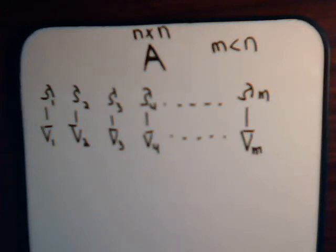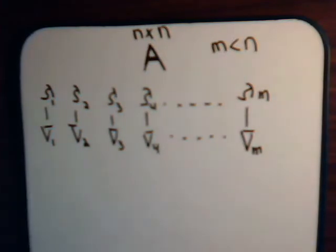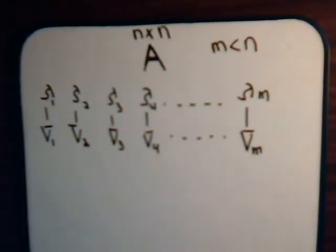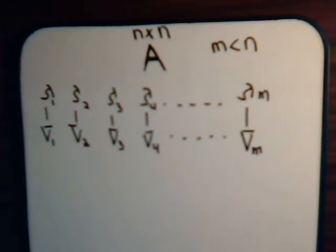That's what we want to prove in this video. To do that, it's a bit of a devious technique. The typical way is to consider these eigenvalues and assume the opposite — assume that they are linearly dependent. If they're linearly dependent, not linearly independent, then that means that somewhere in this group there's at least one eigenvector that's a linear combination of the rest of them.